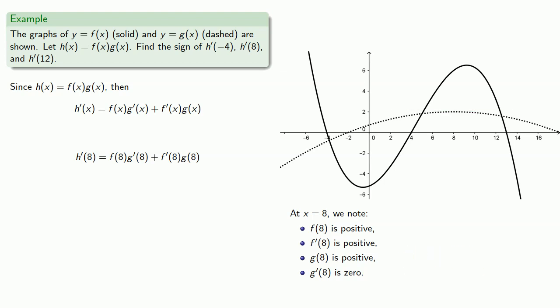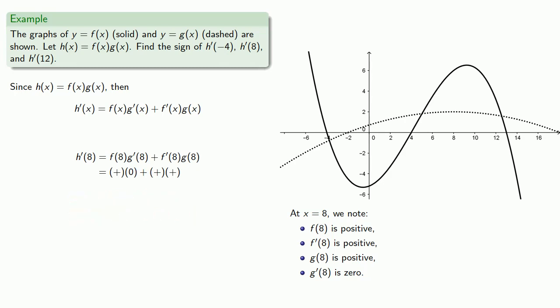So h prime of 8 is a positive number times 0, plus a positive number times a positive number. A positive number times 0 is just 0, and the product of two positives is positive. So h prime of 8 is positive.